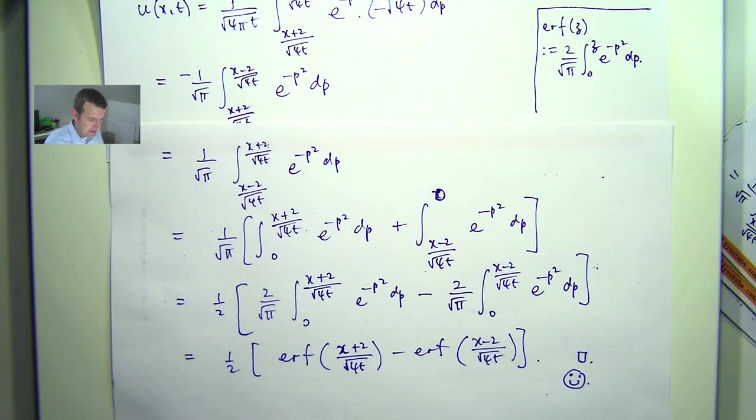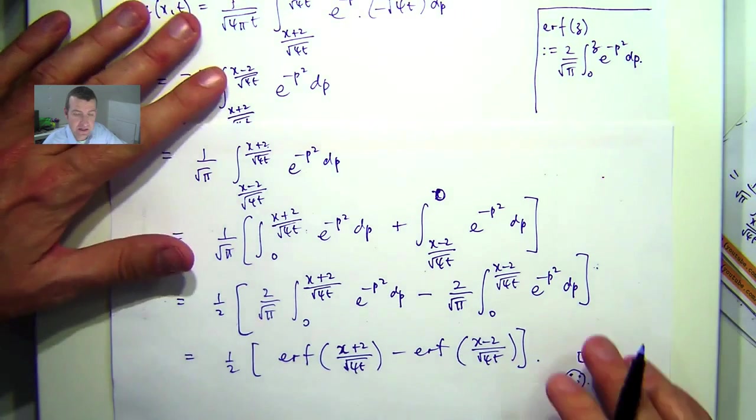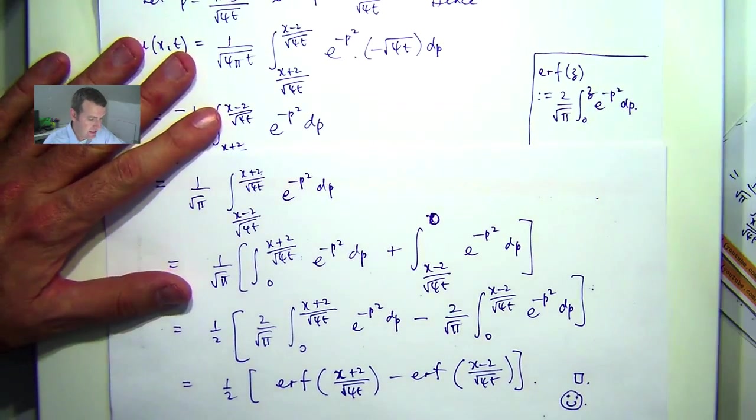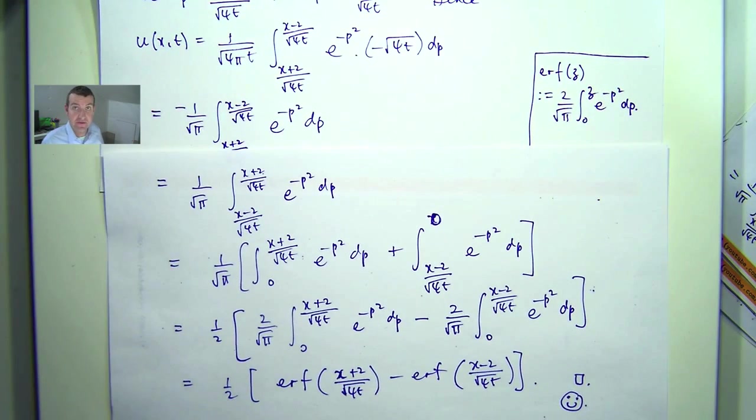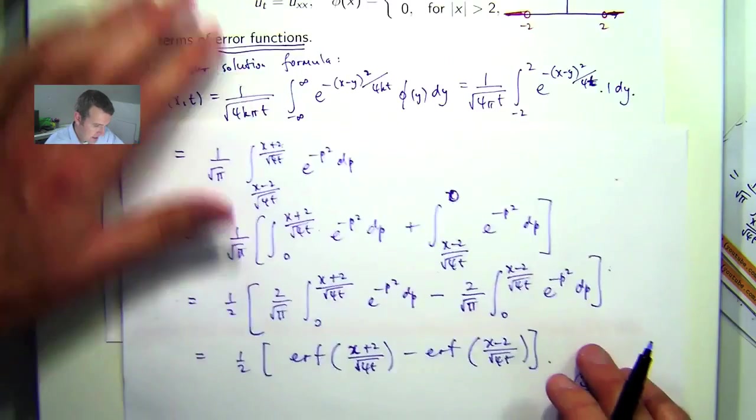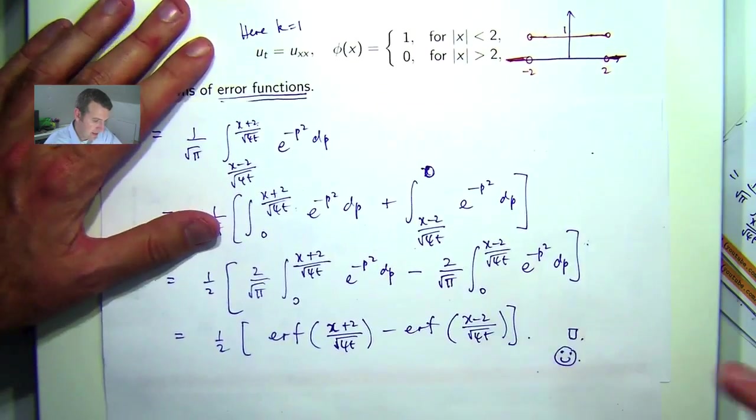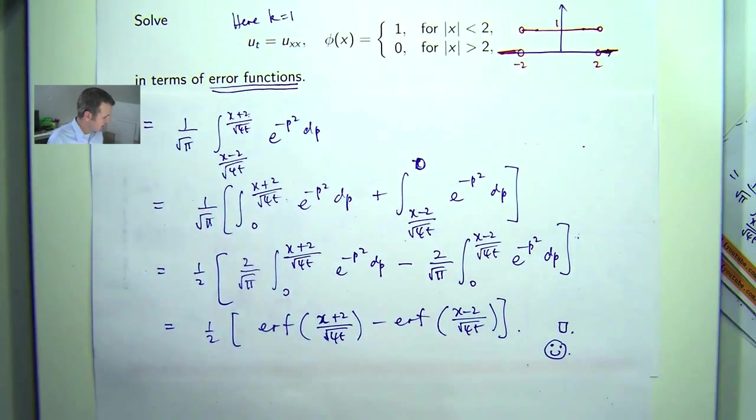Now, like I said before, the error function can be evaluated using, say, the first few terms of a power series or a Taylor series. Now, one interesting side comment. A good question here is, how does the initial temperature affect the actual solution?